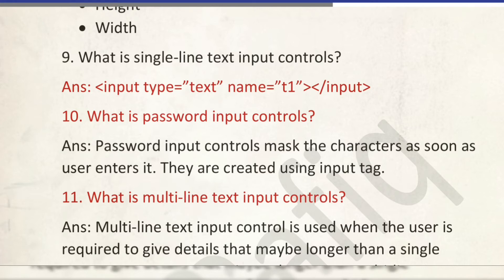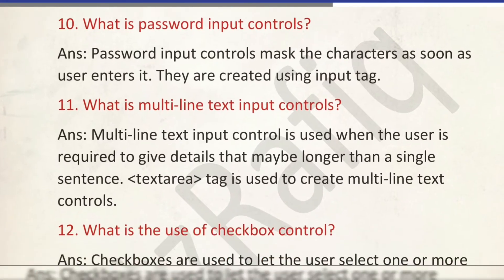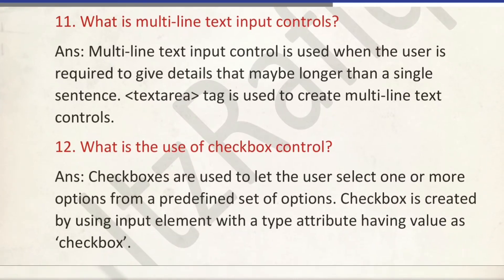Password input control masks the character as soon as the user enters it. They are created using the input tag. What is multiline? Multiline text input control is used when the user wants to take more than one line as input. What is checkbox? Checkbox lets the user select one or more options from a predefined set of options. Checkbox is created using the input element with the type attribute having the value 'checkbox'.